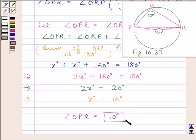So, angle OPR is equal to 10 degrees. This is our required answer. This completes the session. Bye and take care.